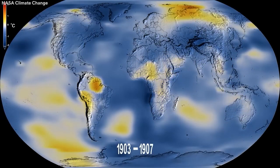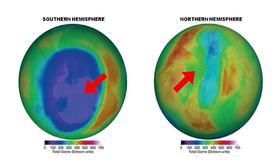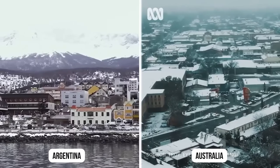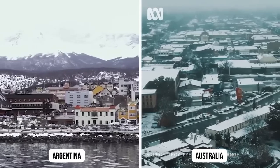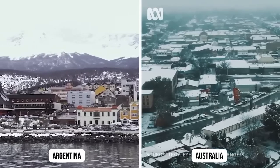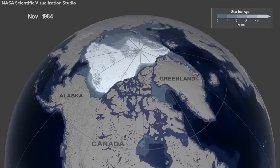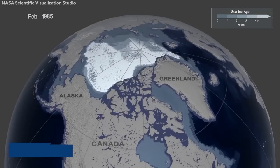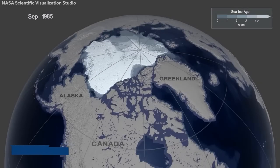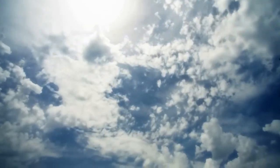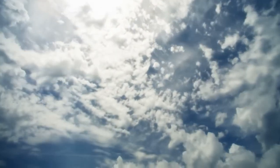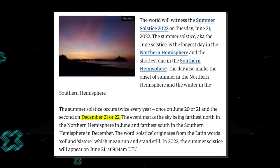Interestingly, seasons in the northern hemisphere are the direct opposite of those in the southern hemisphere. This means that our friends in Argentina and Australia see winter starting in June. In the southern hemisphere, the winter solstice is June 20th or 21st, while the summer solstice or longest day of the year is December 21st or 22nd.